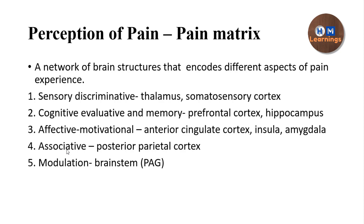There is also modulation. In the upcoming video, you will see that there are certain descending pathways from different regions of the brain that modulate the degree of your pain perception. This is possible because the efferents of the ascending pathway send collaterals to the brainstem, particularly to the periaqueductal gray area, which is how they relate to the modulation of pain.